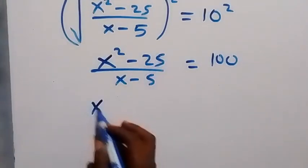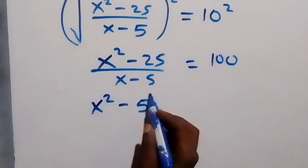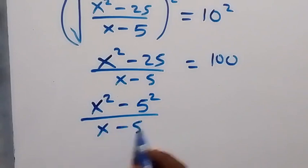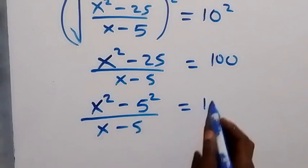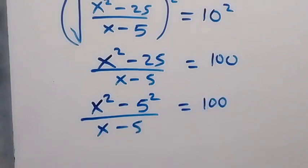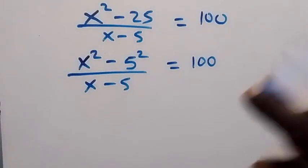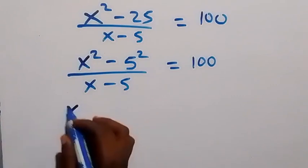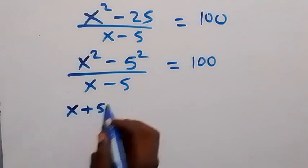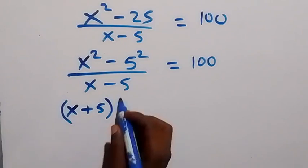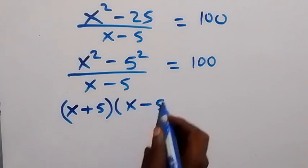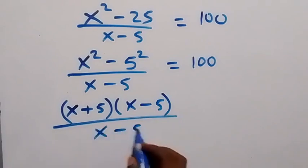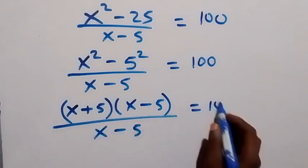In the next step, we can write 25 as 5 squared, so this becomes x squared minus 5 squared, over x minus 5, equals 100. Applying the difference of two squares, this factors as (x plus 5)(x minus 5) divided by (x minus 5), which equals 100.